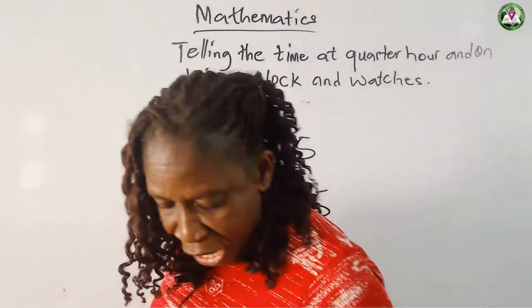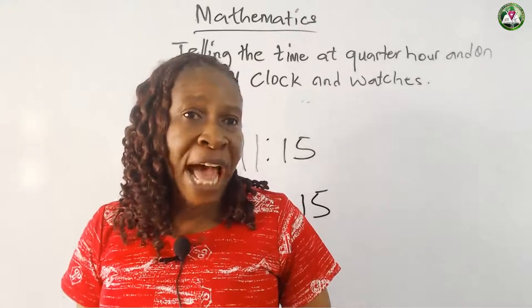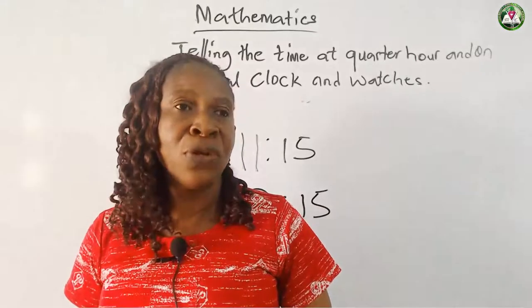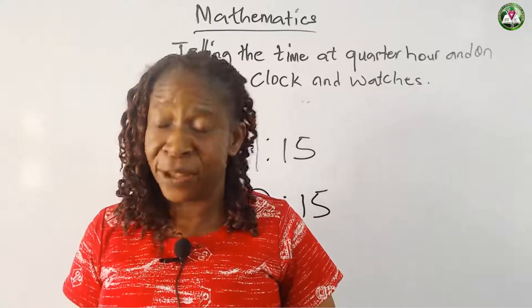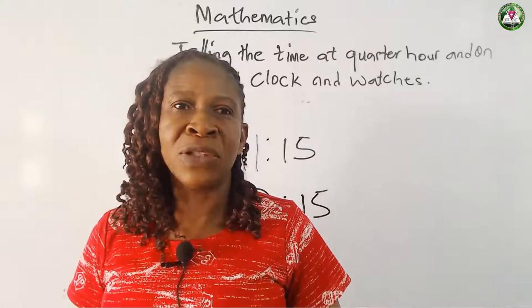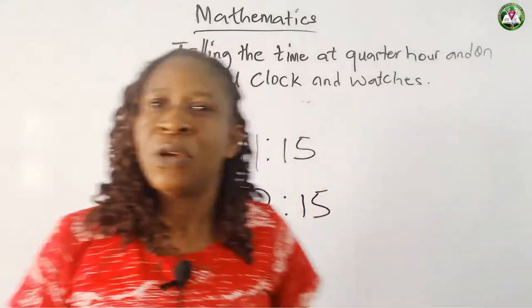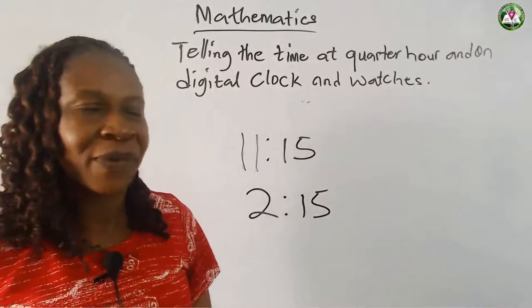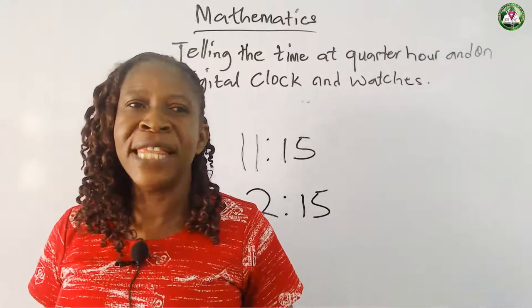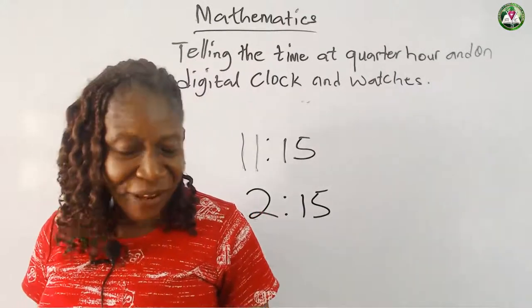I also told us that we have quarter to. For us to use quarter to, what number on the clock face do we use for quarter to? You are not correct if you say ten. For you to say it is quarter to, we use the number nine.